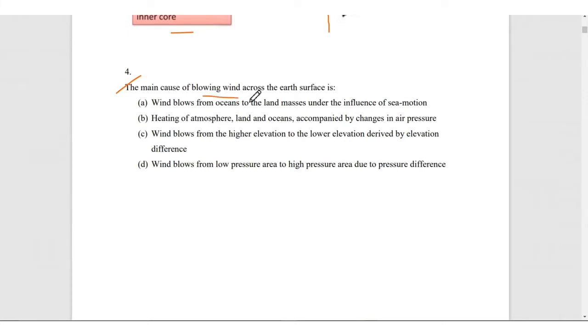The main cause of blowing wind across the earth's surface is due to the heating of atmosphere, land and ocean accompanied by changes in air pressure. The pressure difference concept is correct but they are saying wind blows from low pressure to high pressure. This is wrong because wind always flows from high pressure to low pressure.